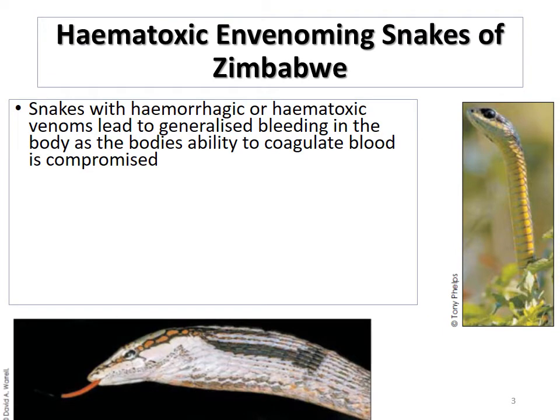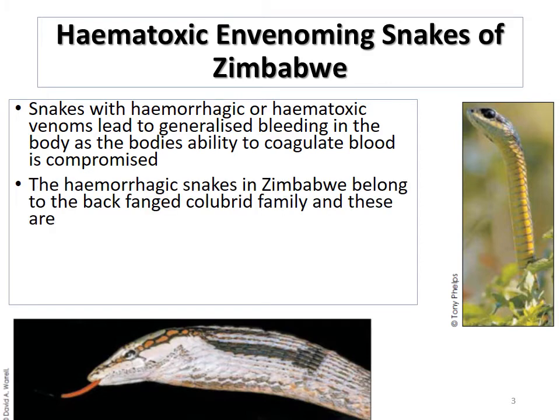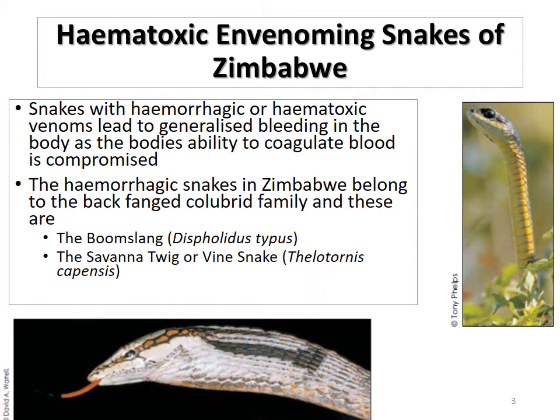The hemotoxic envenoming snakes in Zimbabwe have venoms which lead to generalized bleeding in the body as they affect the body's ability to coagulate blood — the clotting mechanisms are disrupted such that you can't adequately coagulate the blood. The hemorrhagic snakes in Zimbabwe belong to the back-fanged colubrid family, and we've got two. The first one is the boomslang, and the second one is the savanna twig snake or the savanna vine snake. There are two other snakes which are responsible for hemotoxic or hemorrhagic envenomation in Zimbabwe.